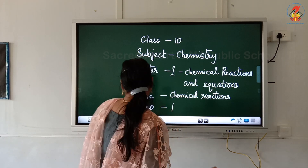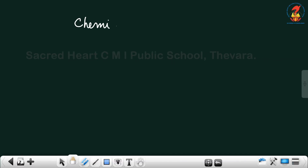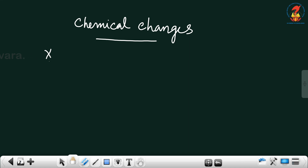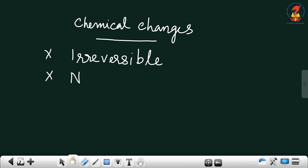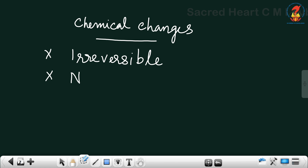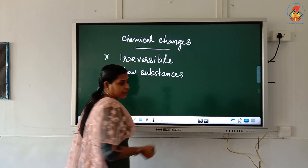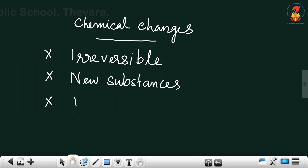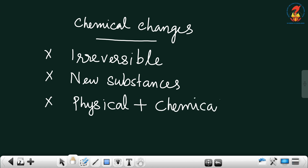Chemical changes, as we studied already, are irreversible changes. New substances are produced — sometimes one new substance, sometimes more than one. In this case, both physical as well as chemical properties of the materials will change.